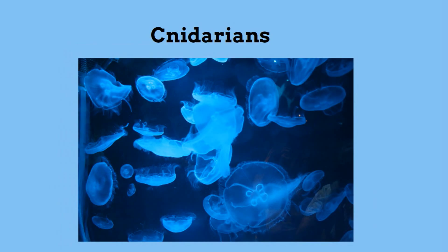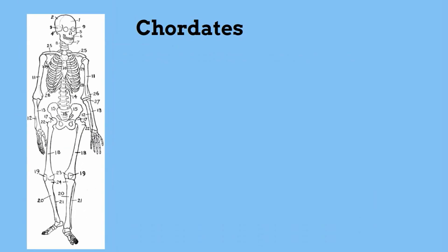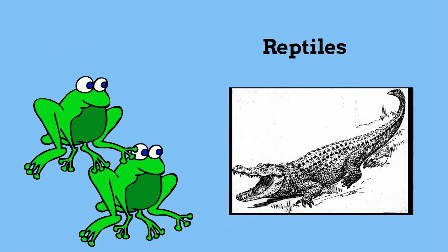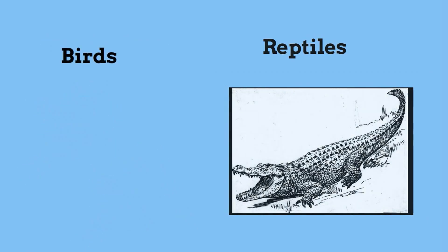All of these phyla contain animals that are invertebrates, which means they do not have a vertebra. The last phylum are chordates, and they have a backbone. Some common chordates are fish, amphibians, reptiles, birds, and mammals.